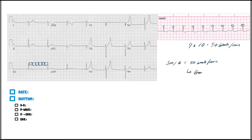50 beats per minute — that's definitely less than 60, so this is bradycardic, this is bradycardia. Next we have to determine the R-to-R interval. Looking at the strip, the R-to-R interval here is about three boxes, and again about three boxes there.